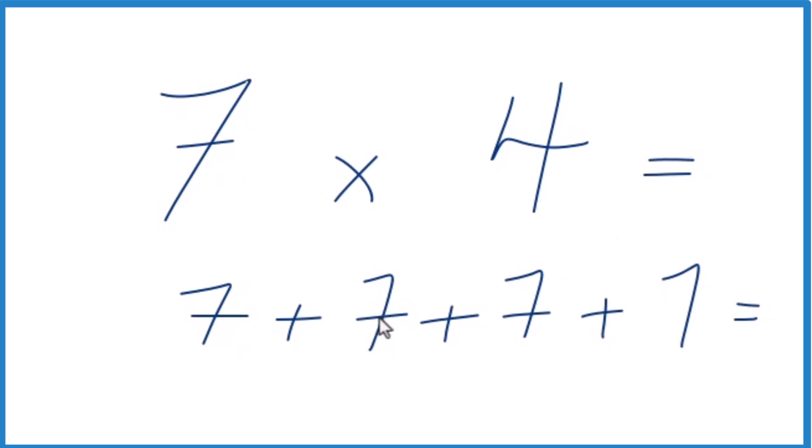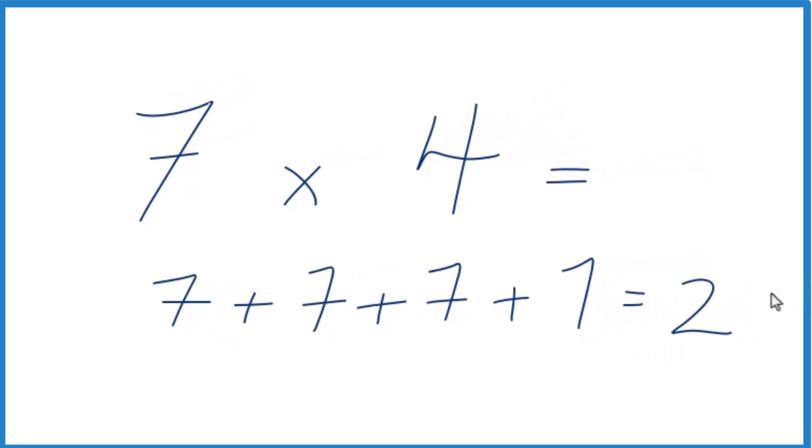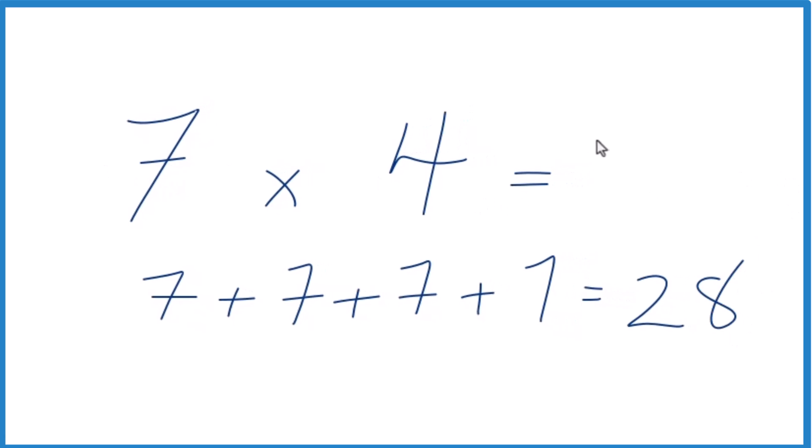7 plus 7 is 14. 14 plus 7 is 21. 21 plus 7 is 28. So 7 times 4, that equals 28. That's one way to think about it.